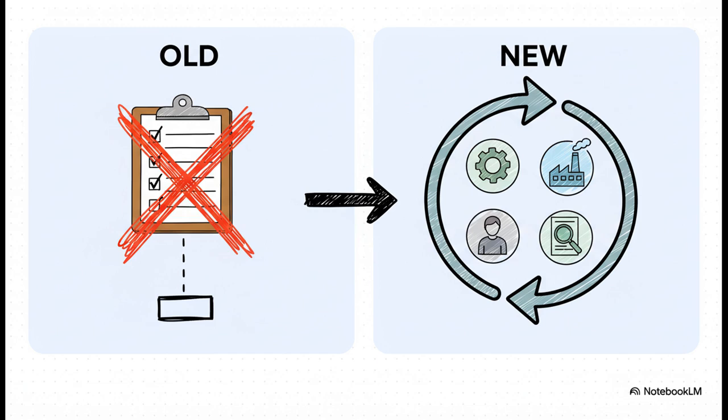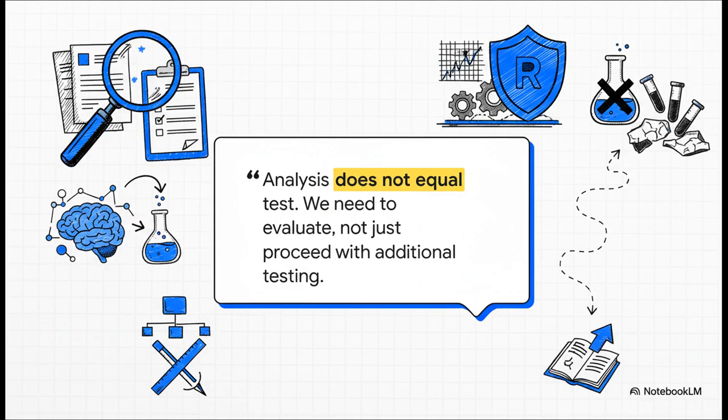Well, the new standard basically throws that whole recipe out. Instead, it demands an integrated risk management process, one that's deeply woven into the principles of ISO 14971. Evaluation isn't the last thing you do. It's something you do continuously throughout the device's entire life cycle. The whole spirit of this new standard is captured perfectly right here. Analysis does not equal test. It's a huge push for more scientific thinking, more justification before you even dream about running a test. The goal is to truly evaluate the risk using all the data you have, all the scientific principles you know, not just to blindly run down a list of tests because a table told you to.